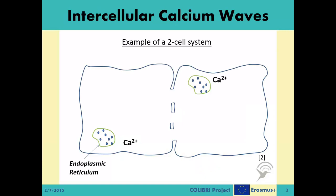Let us give an example of how the ICW mechanism works by considering a simple two-cell system. Based on some extracellular event or occurrence — for example, an increase of the heat level in the environment — the cell is triggered. The cell reacts to the stimuli by a chain of chemical reactions, which end with the release of a special type of molecules called the IP3s. These IP3 molecules start diffusing inside the cell, and some of them reach the IP3-sensitive receptors at the membrane of the organelle called the endoplasmic reticulum, or ER for short. The ER stores a high level of calcium ions.